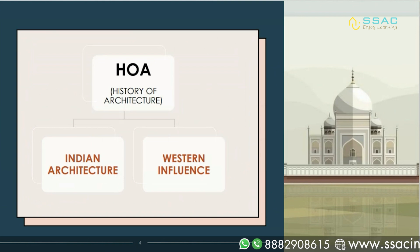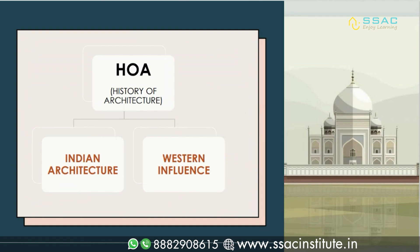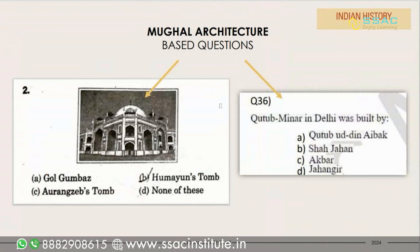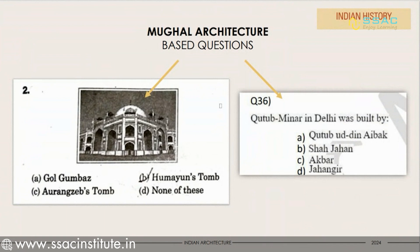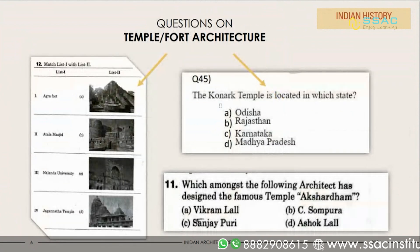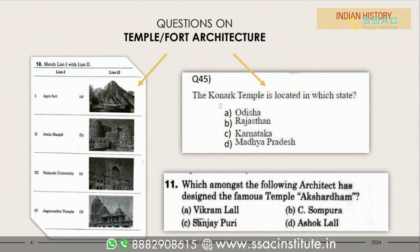Starting with History of Architecture, it is divided into two parts: Indian history and western influences. In Indian history, the most frequently asked questions are on Mughal architecture. Picture-based questions can be asked — you have to recognize which structure it is, who built it (the ruler or emperor), and where its location is. These three types of questions are commonly seen in Mughal architecture.